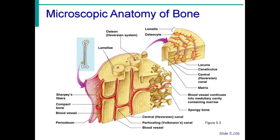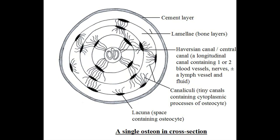Here is an overview of the microscopic anatomy of the bone. The osteon has lamellae, which are rings around the central canal. We also have lacunae, which are cavities containing the bone cells, called osteocytes — they are arranged in concentric circles. We also have canaliculi, which are tiny canals that radiate from the central canal to the lacunae.